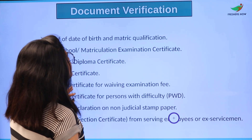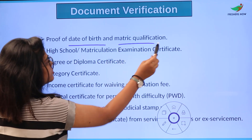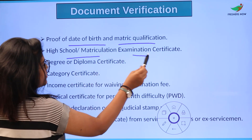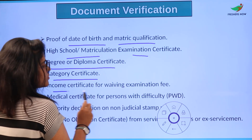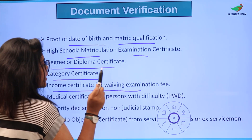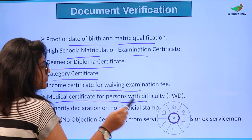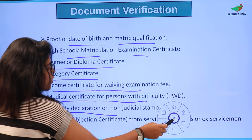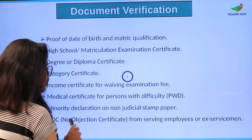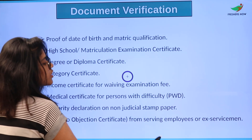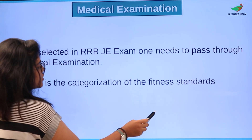For document verification, you need proof of your date of birth and metric qualification, high school and matriculation examination certificate, degree or diploma certificates, category certificate, income certificate for receiving your examination fee waiver, medical certificate for persons with difficulty under the PWD category, minority declaration on non-judicial stamp paper, and NOC (No Objection Certificate) from serving employees or ex-servicemen.